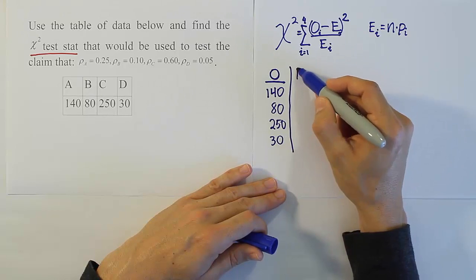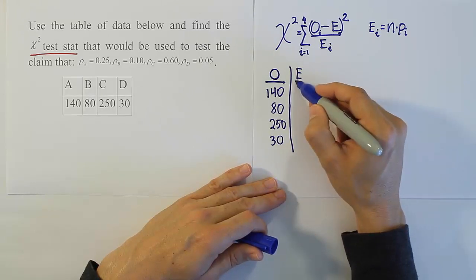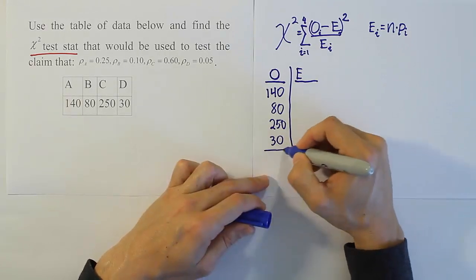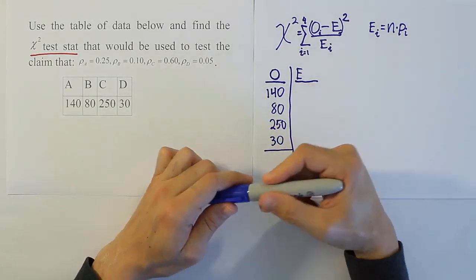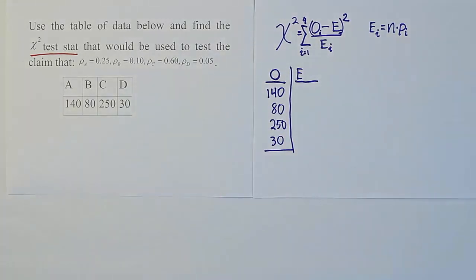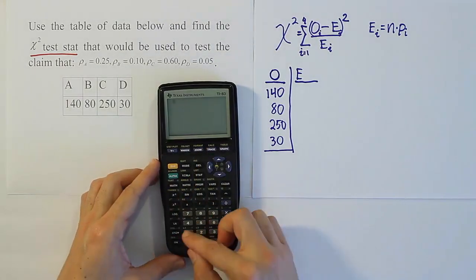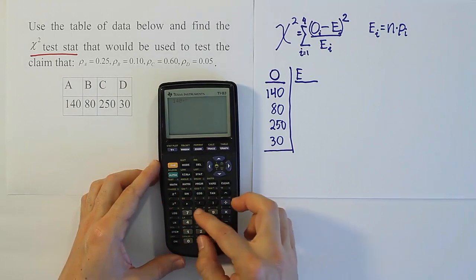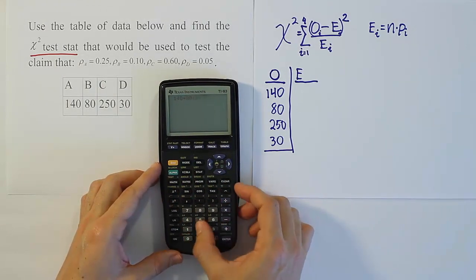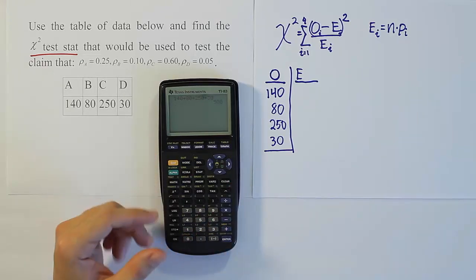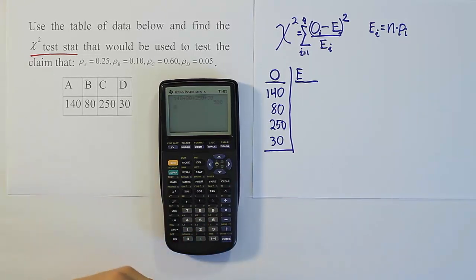Now, next to that, we want to do the expected values. Now, when we get the expected values, here's where we're going to do the multiplication by n for each of the p_i's that we have. So let's first get the n. The n is found by summing up the observation column. So we have 140 plus 80 plus 250 plus 30. And when you do that, you get a sum of 500. So our total here is going to be 500.